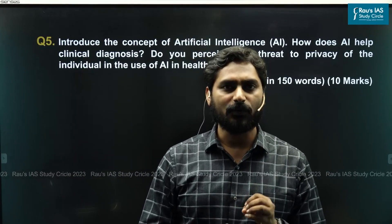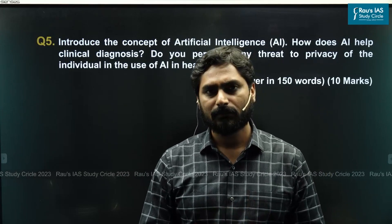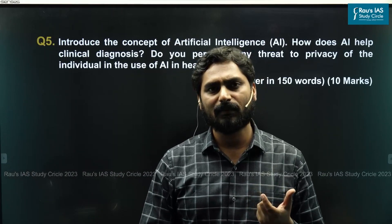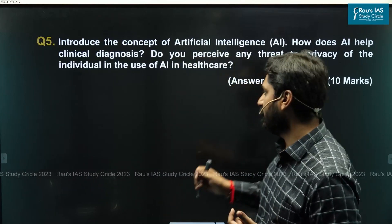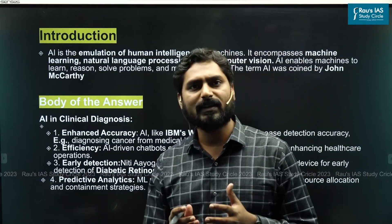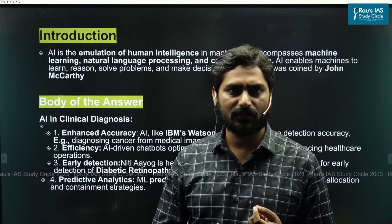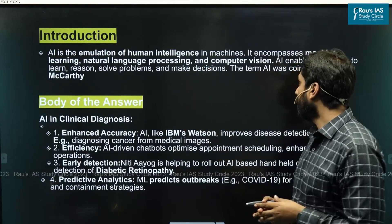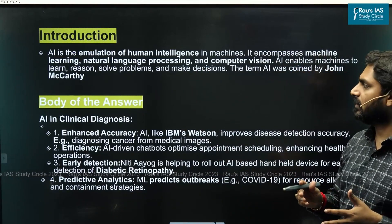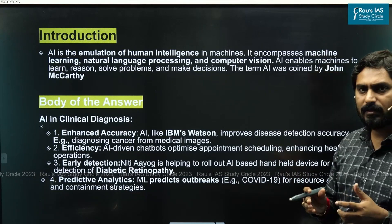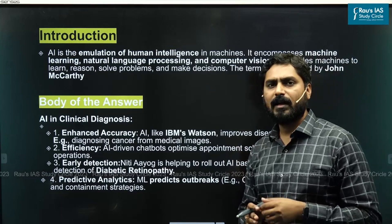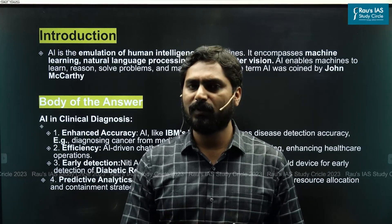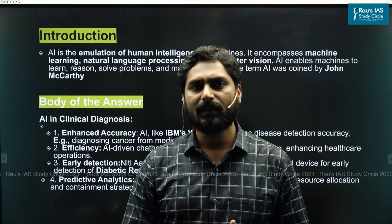Let us see how we could have approached this question. In the introduction, you could have given a simple definition of AI. In science and technology questions, it is always advisable to use a definition-based introduction. AI is the emulation of human intelligence in machines. It encompasses machine learning, natural language processing, and computer vision. AI enables machines to learn, reason, solve problems, and make decisions. The term was coined by John McCarthy in the 1950s. A simple definition suffices to introduce the concept of AI and start this answer.